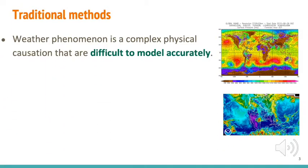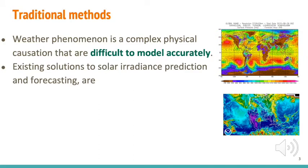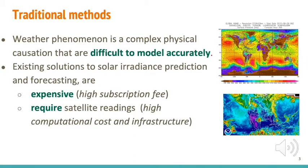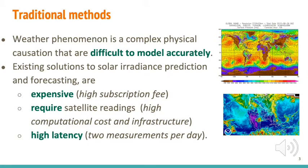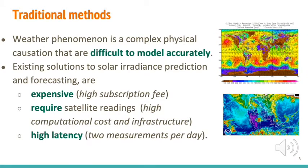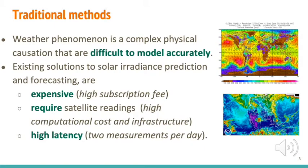Weather phenomenon is a complex physics causation that is difficult to model accurately. Existing solar radiation predictions are based on physics models which are expensive, require satellite readings, and have high latency.